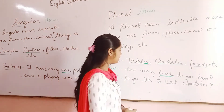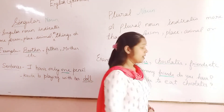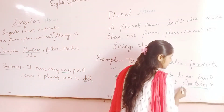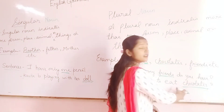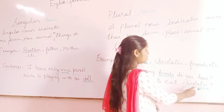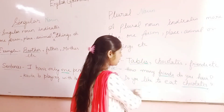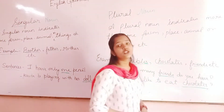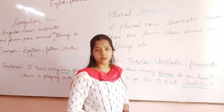The second sentence is: 'Do you like to eat chocolates?' Pay attention — here 'chocolates' is mentioned. So chocolates will be a plural noun.